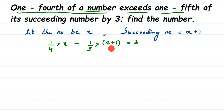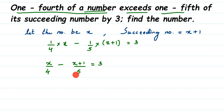Now let's solve the equation. Opening the brackets: 1 by 4 into X gives X by 4. Then 1 into (X plus 1) gives (X plus 1) by 5. So we have X by 4 minus (X plus 1) by 5 equals 3. We cannot subtract fractions with unlike denominators, so we need to make the denominators the same by taking the LCM. The LCM of 4 and 5 is 20.